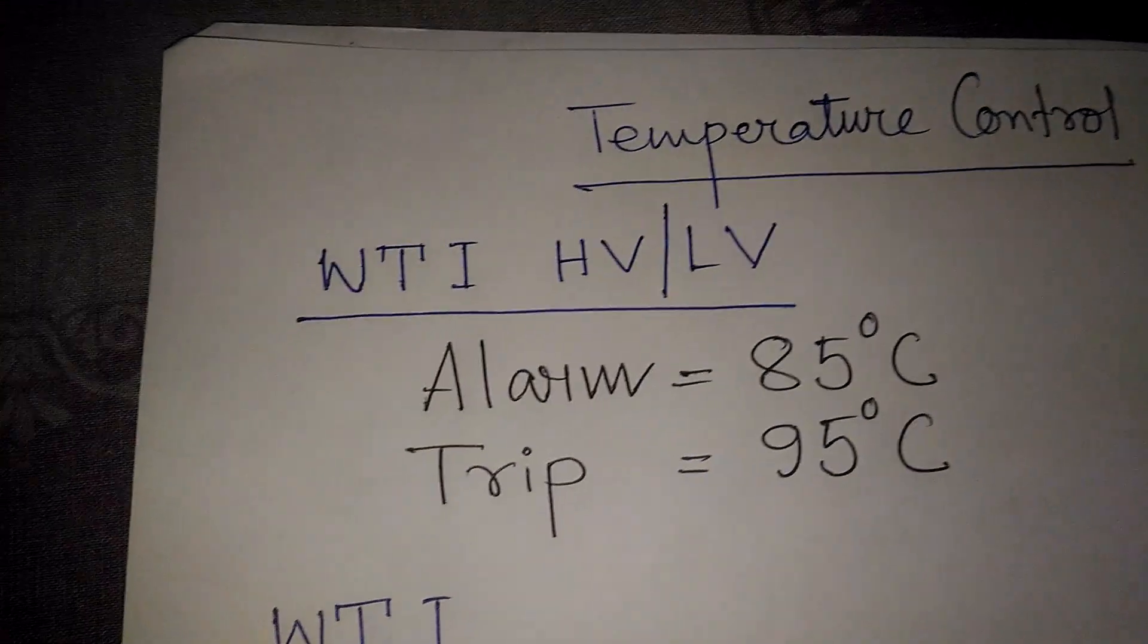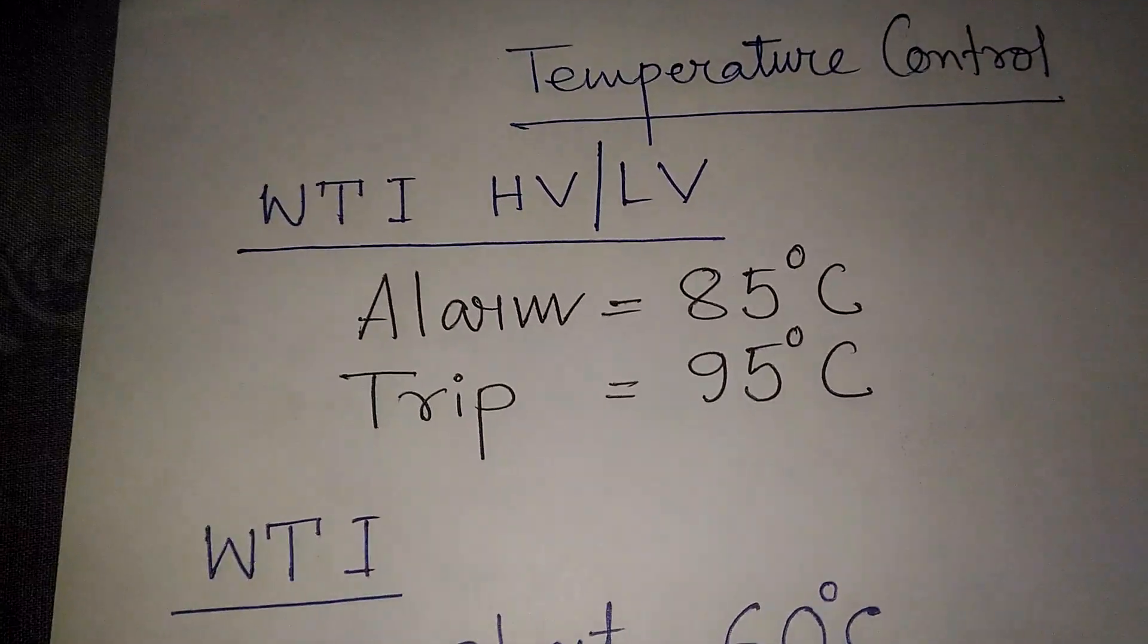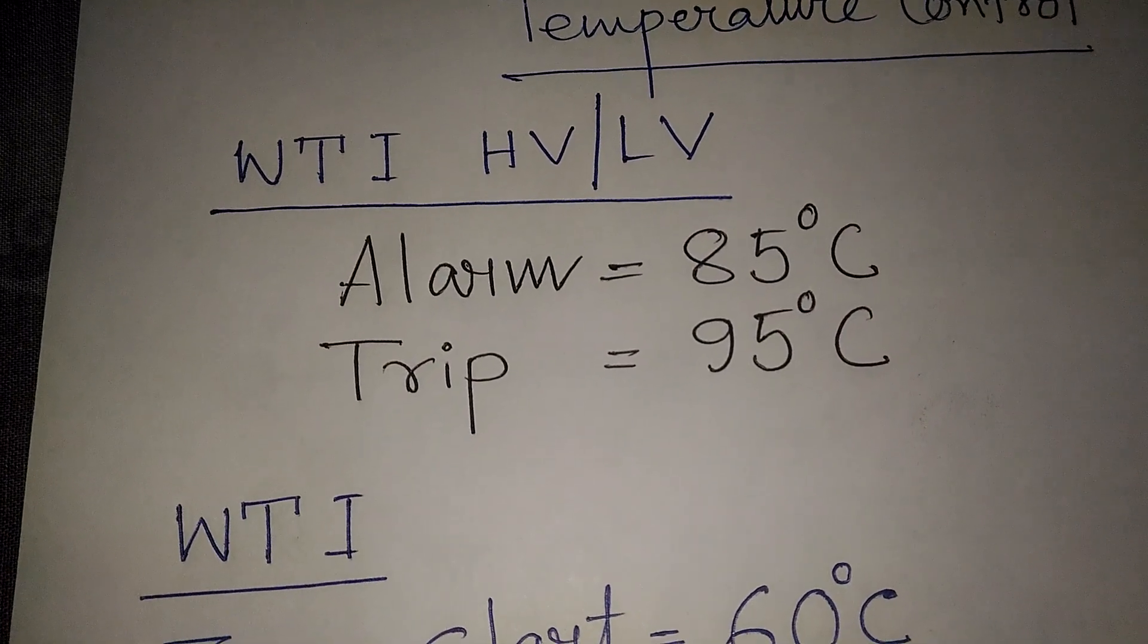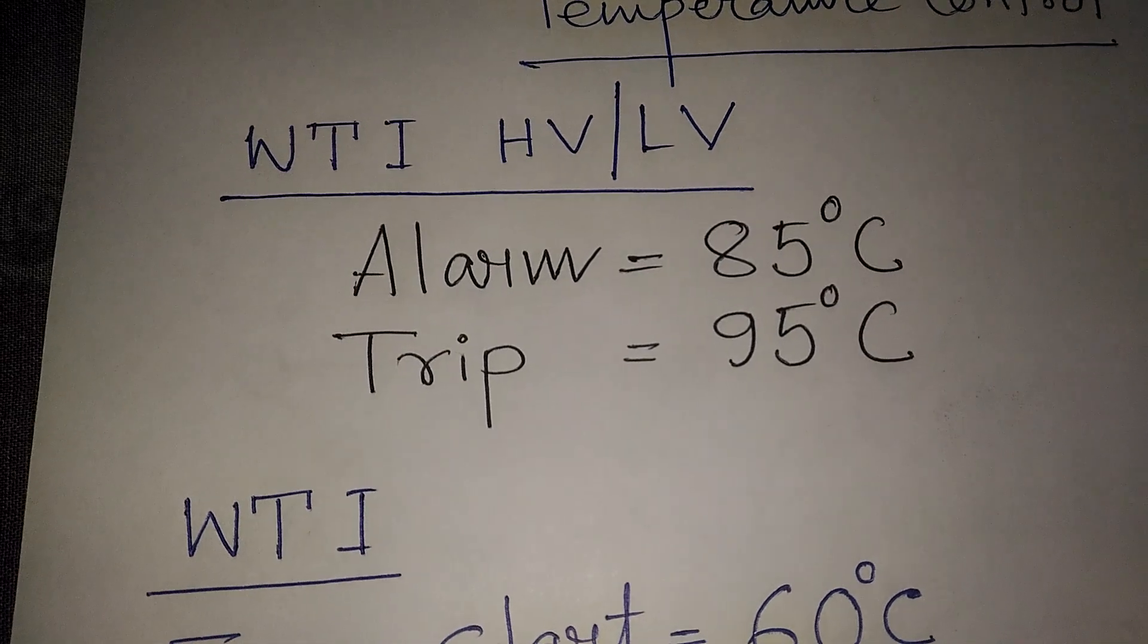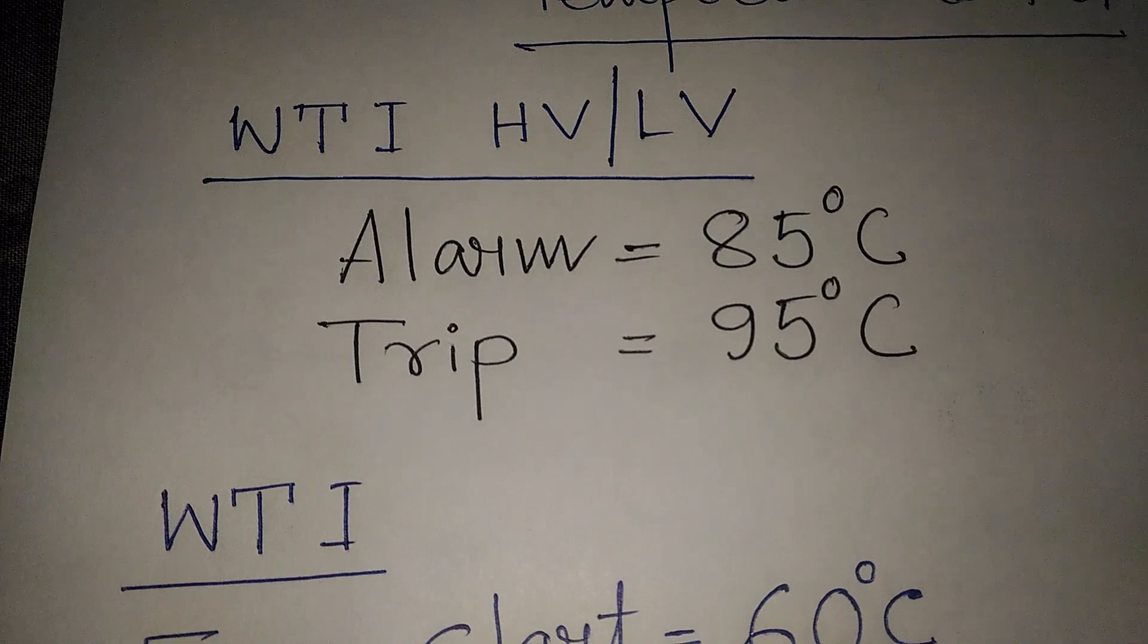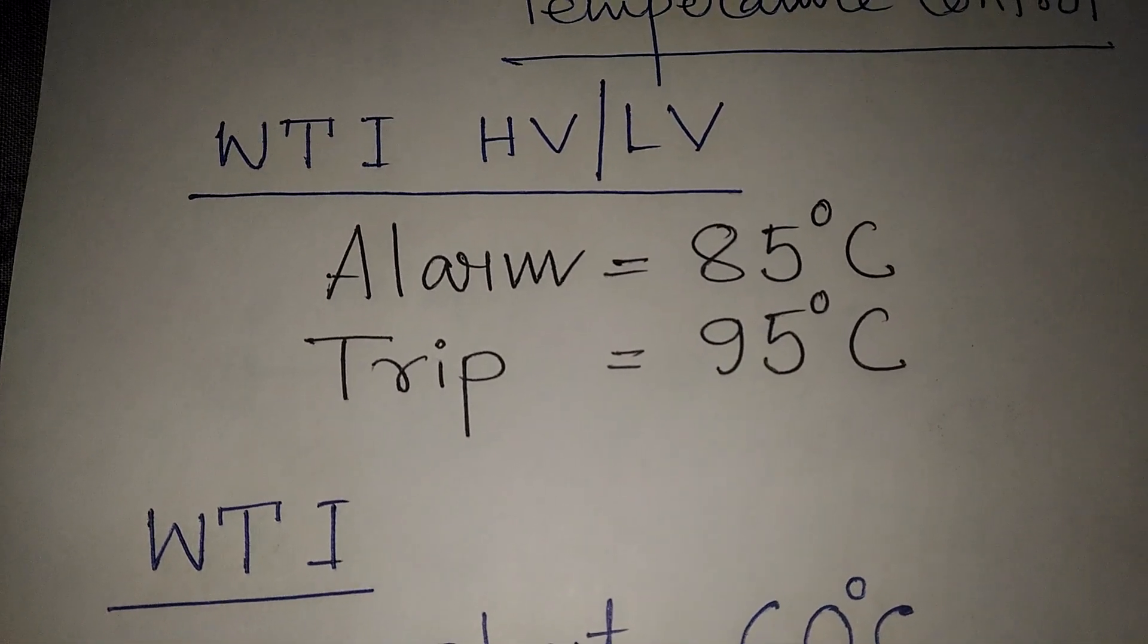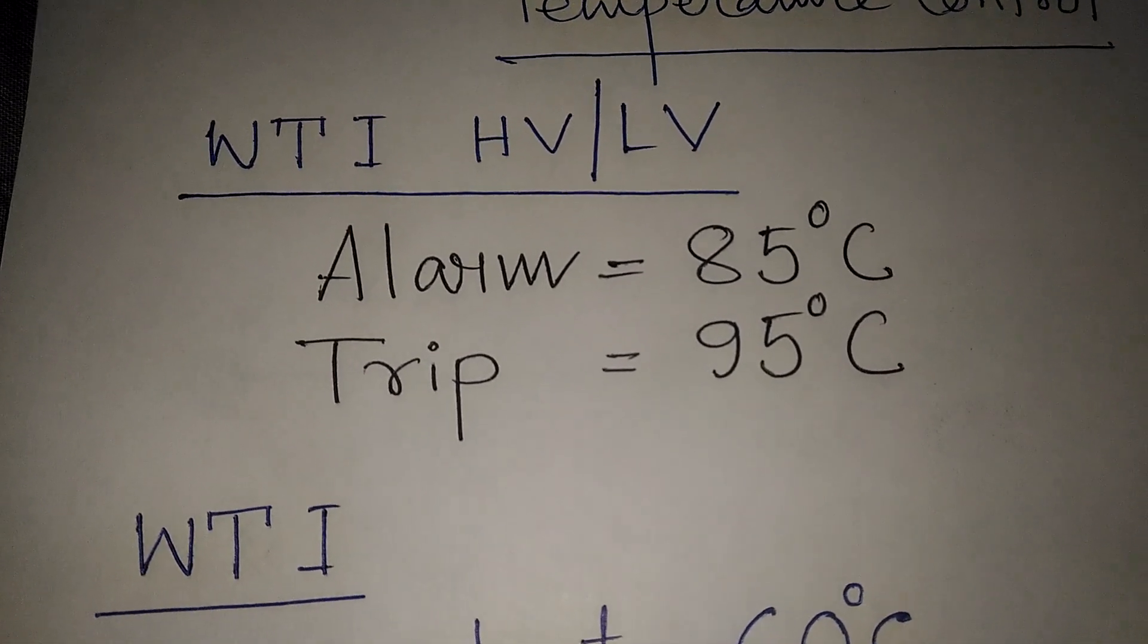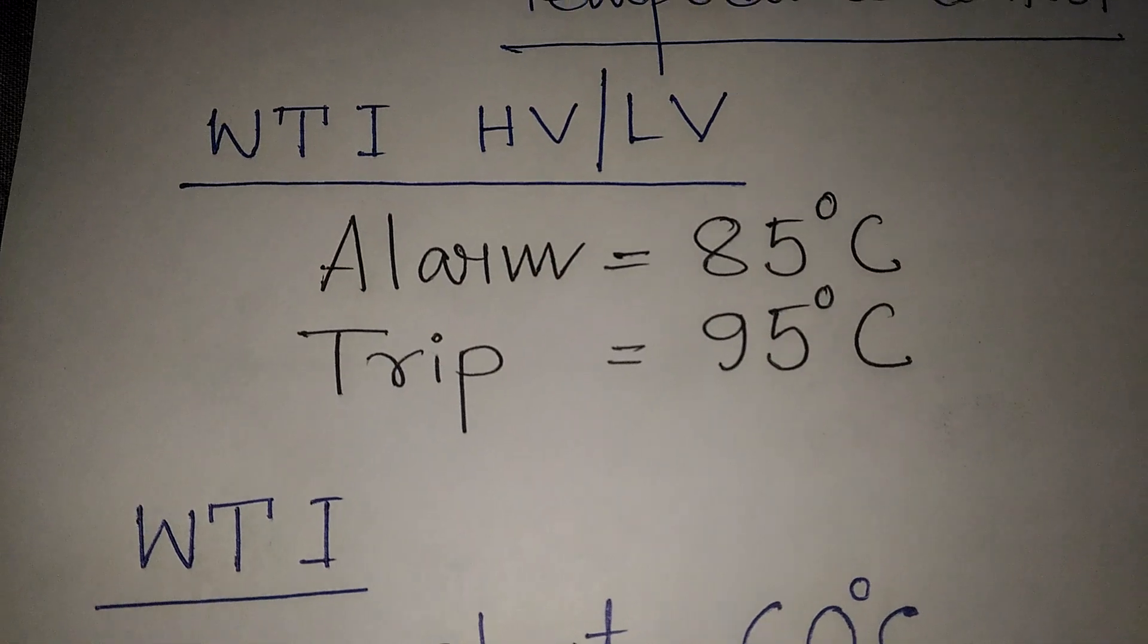WTI is used for both HV and LV winding temperature indicator, high voltage side and low voltage side.